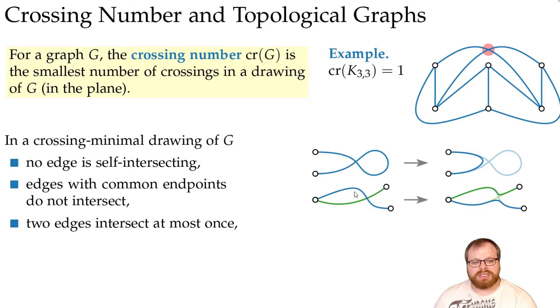Also, two edges intersect at most once. If we look at two edges that intersect twice, then again we can do some rerouting. We locally route the blue here, and the green around.